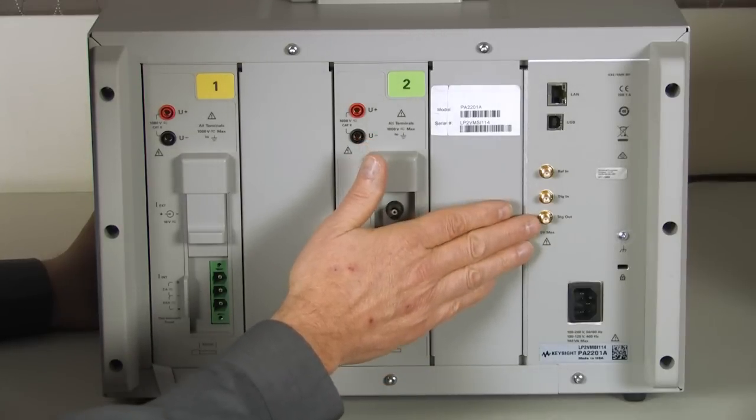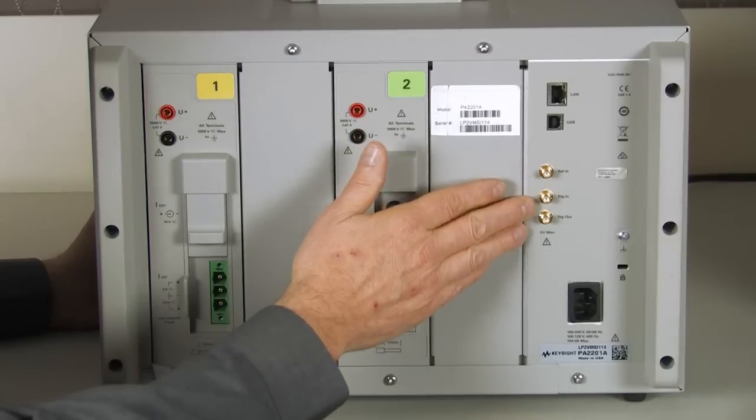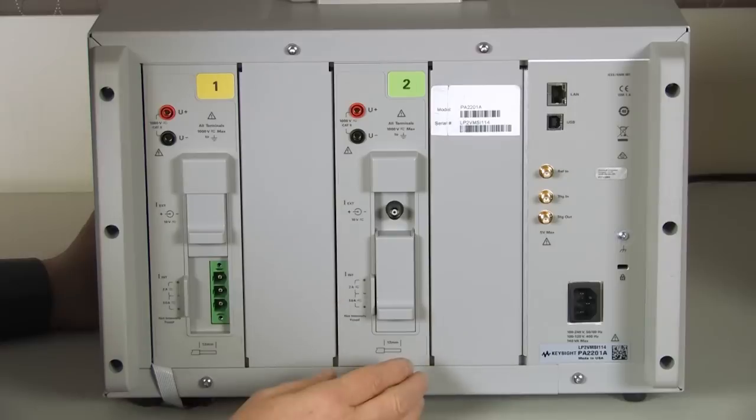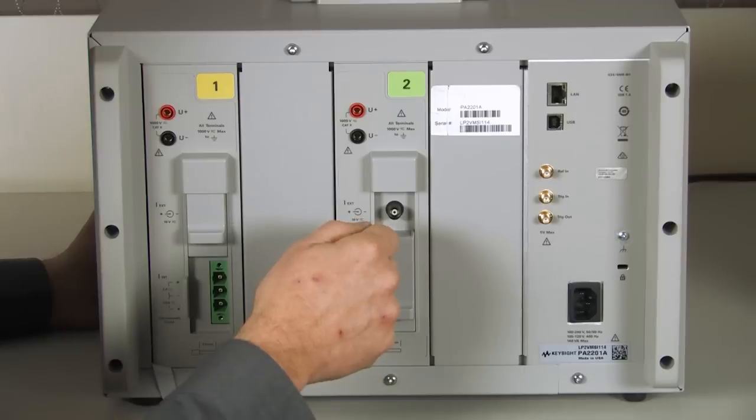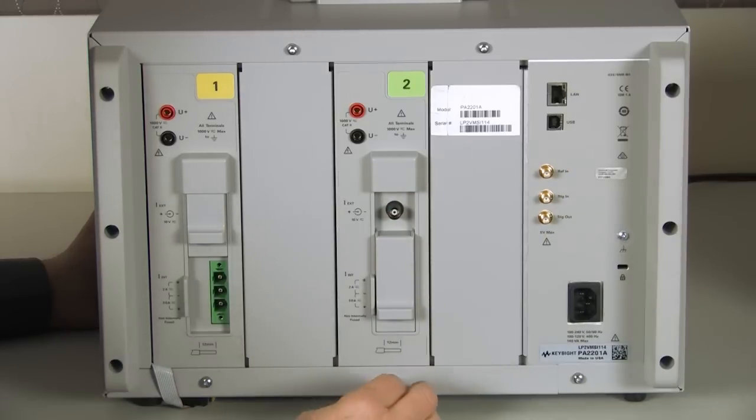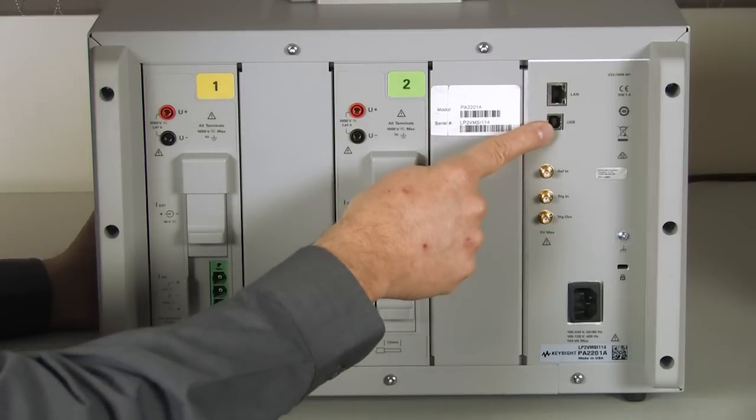And then as we circle around, we have both a trigger in, trigger out, and a 10 megahertz clock signal. All of these are with an SMA connector. We deliberately made these different than the BNC connector so that you can't mistakenly connect a BNC to one of these other signals. And then finally, we have a LAN connection and a USB connection.